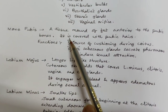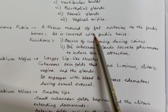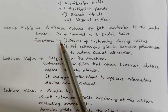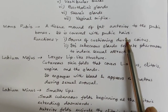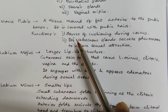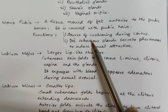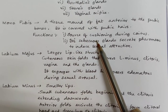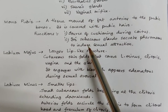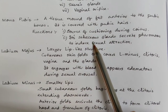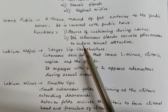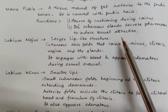The Mons pubis is a tissue mound of fat anterior to the pubic bones, covered with pubic hair. Its functions are: it acts as a source of cushioning during coitus, and its sebaceous glands secrete pheromones to induce sexual attraction.